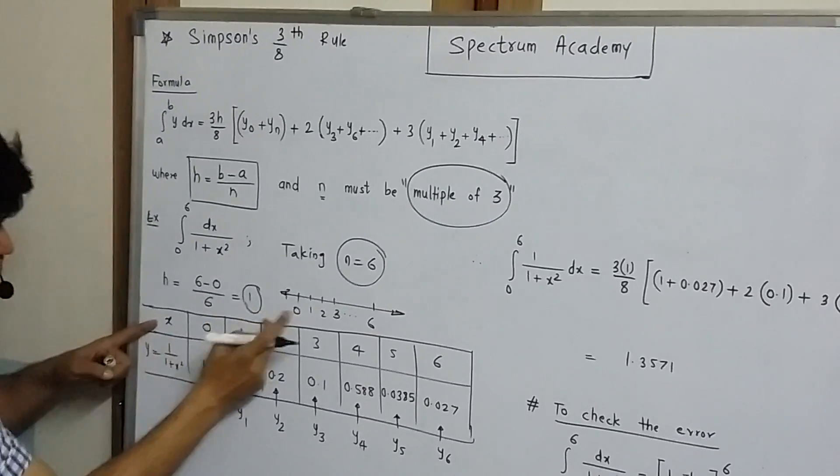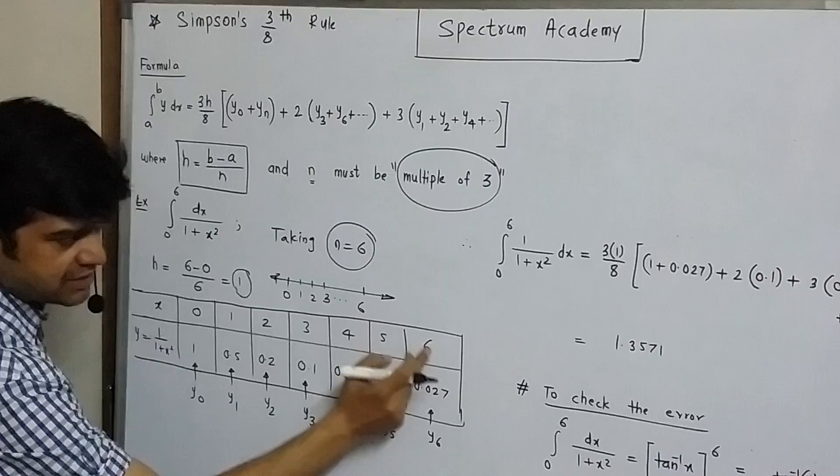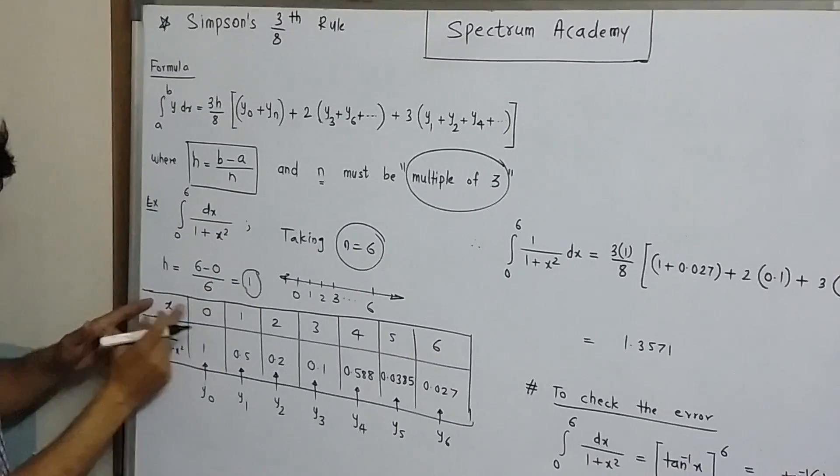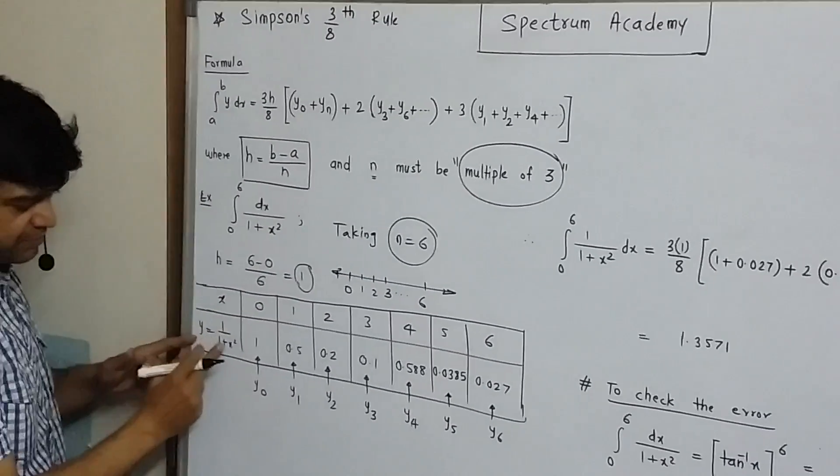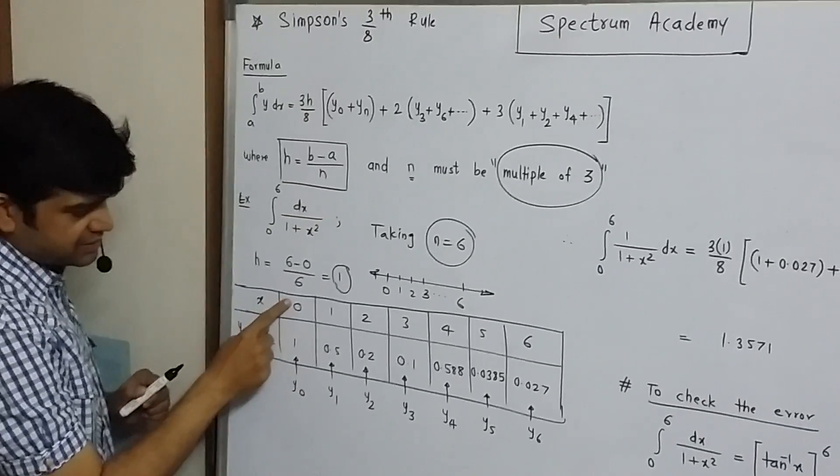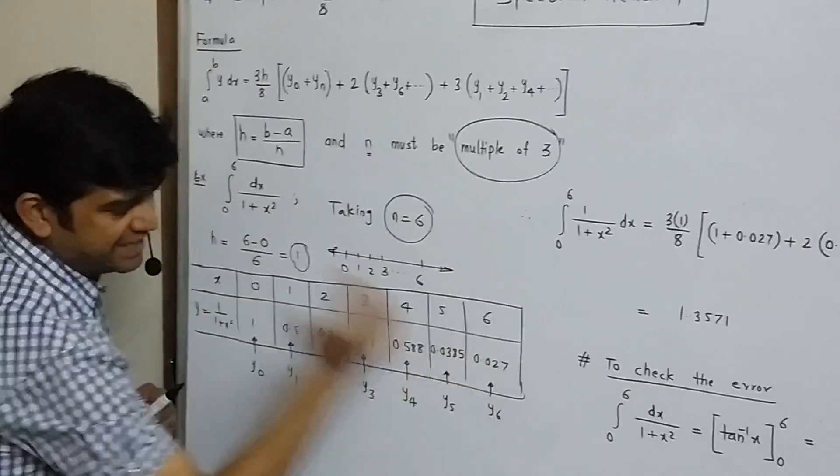So x values are 0, 1, 2, 3, 4, 5 and 6. Corresponding to each value of x we evaluate y, that is 1 by 1 plus x square. So if x is 0 we get y, x is 1 we get y and so on. Complete this table.